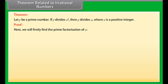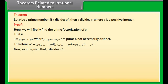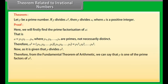Theorem related to irrational numbers: Let P be a prime number. If P divides A squared, then P divides A, where A is a positive integer. Proof: We will first find the prime factorization of A. That is, A is equal to P1 × P2 × ... × Pn, where P1, P2, ..., Pn are primes, not necessarily distinct. Therefore, A squared is equal to P1 × P2 × ... × Pn × P1 × P2 × ... × Pn.